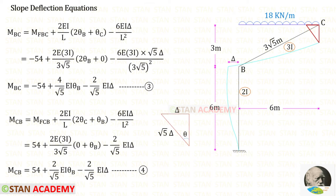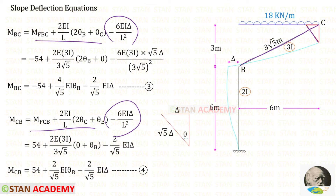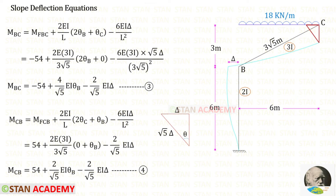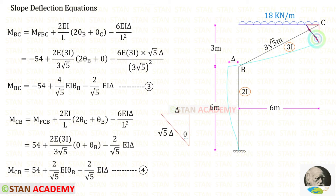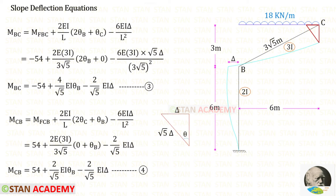Now let us write the slope deflection equations for member BC. This member also has a displacement, so we add sway moments. For member BC the displacement occurs on the right side, so the sway moments are negative. The length of BC is 3 root 5 and the moment of inertia is 3i. The displacement is root 5 delta. Applying the fixed end moments −54 and +54, and since theta_C equals 0, we get two equations for member BC.